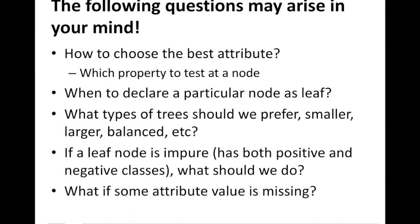When to declare a particular node as a leaf node. What types of trees are generally preferable — smaller, or larger, or balanced? And if a leaf node is impure, what should we do?